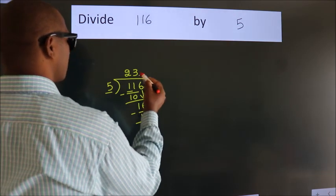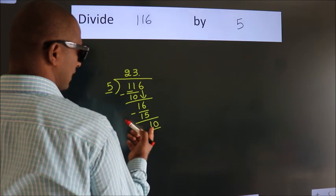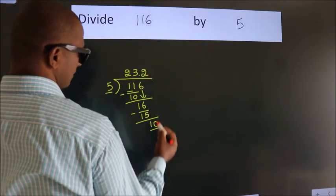So what we do is, we put a dot and take 0. So, 10. When do we get 10 in the 5 table? 5 times 2 equals 10.